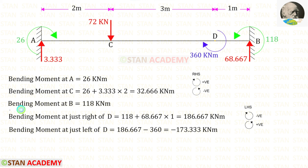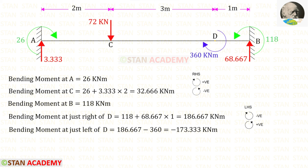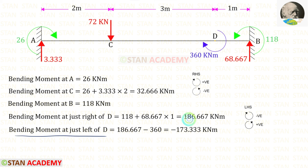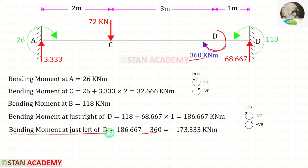Let us find the bending moment at point B. At point B we have MB, which is acting in the anti-clockwise direction, so it will be positive. Now let us find the bending moment at just right of D. MB is acting in the anti-clockwise direction, so it is positive. RB is also acting in the anti-clockwise direction, so it is positive, with a distance of 1. For the bending moment at just left of D, we add the concentrated moment 360 — since it acts clockwise, it is applied as negative.